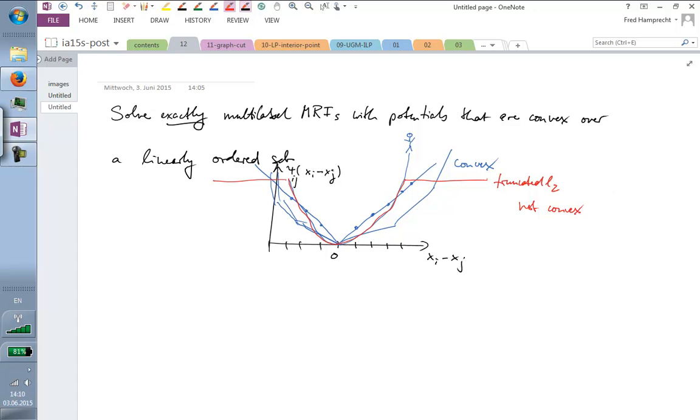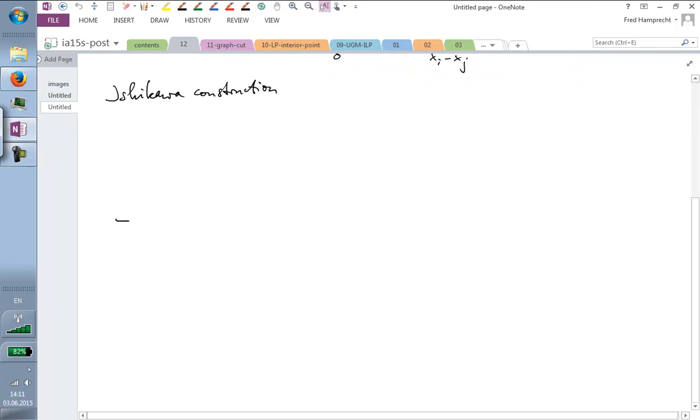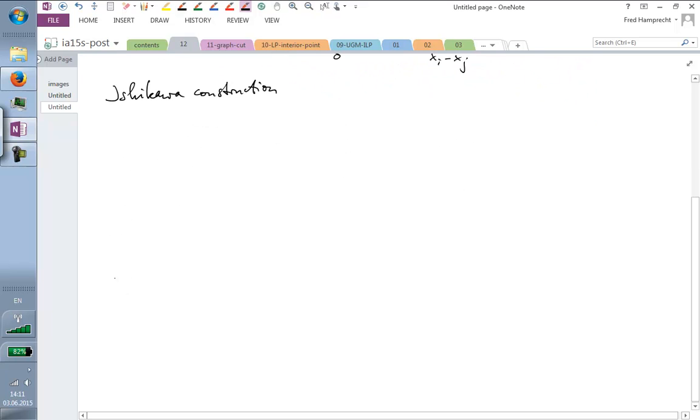And this construction here works only for convex priors. And Ishikawa found out how we can use graph cuts using an ingenious construction, which I'm going to show you now. So I'm going to draw the tiny example that he also has in his paper.